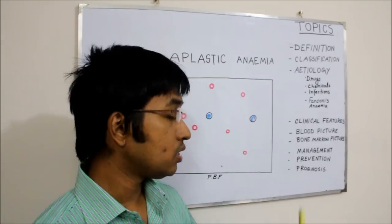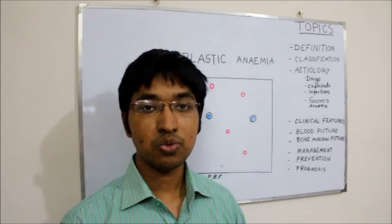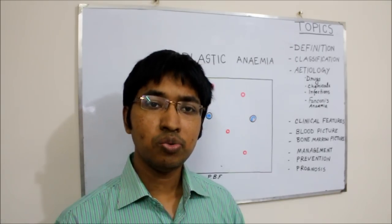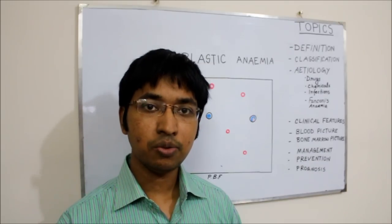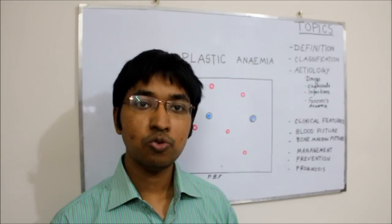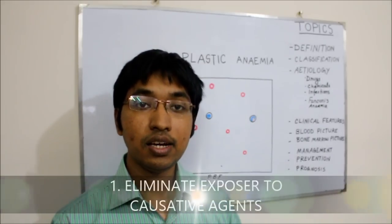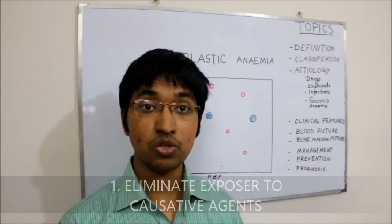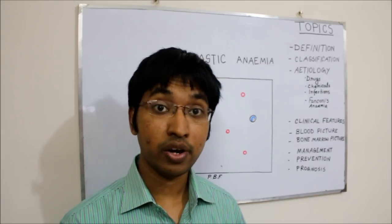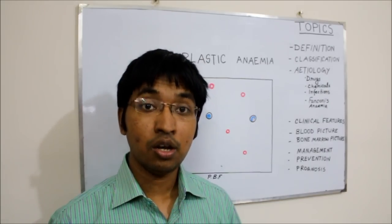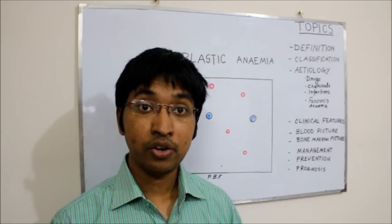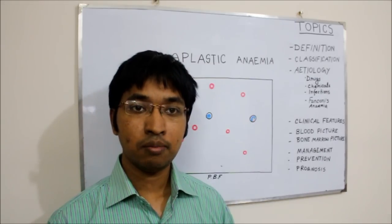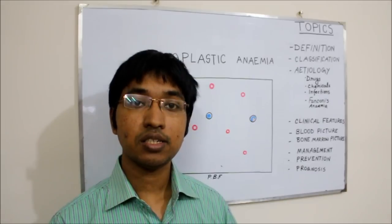Now we will discuss the management of a patient with aplastic anemia. We will try to manage this in three ways. First, we will try to eliminate any underlying cause. For example, if the patient works in a factory where he or she is exposed to benzene, we counsel the patient to change their job. If a certain drug caused aplastic anemia, then that drug must be stopped.